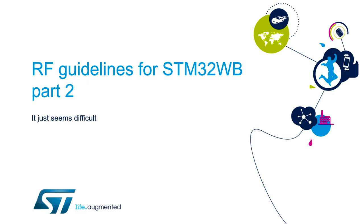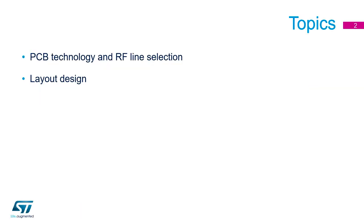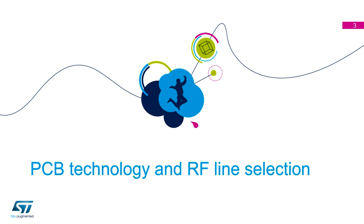Hello, welcome to RF guidelines for STM32 WB session. In the first part we deal with components, schematic and matching network for design of the RF path for STM32 WB. Watching this video you get basic information about the layout of the RF path for STM32 WB, comprehensive information for PCB technology, basic differences between commonly used RF lines, and a couple of examples of size and impedance calculations.